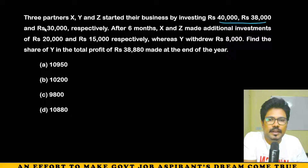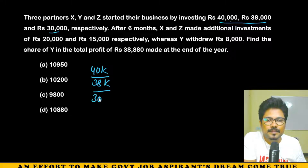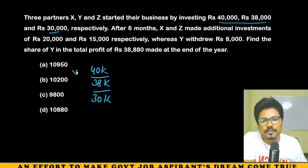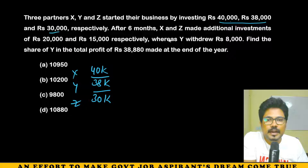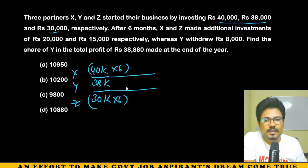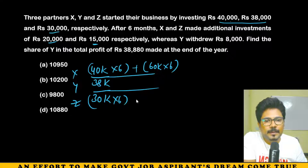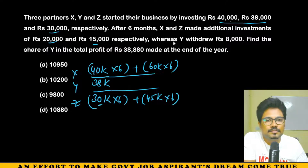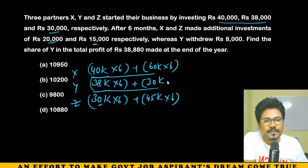Next question: X, Y, Z are 3 partners investing 40,000, 38,000, and 30,000 respectively. After 6 months, X makes an additional investment of 20,000 (total 60,000) and Z adds 15,000 (total 45,000). Y withdraws 8,000 (remaining 22,000 for last 6 months). Find Y's share of the total profit.